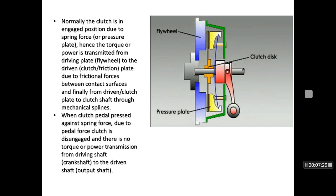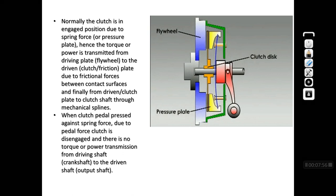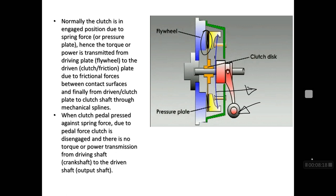This diagram indicates the working of a single plate clutch, showing the flywheel, pressure plate, and friction plate. When the clutch is in the disengaged condition, a small gap is present between the flywheel and the friction plate. When you press the lever against the spring action, the friction plate engages with the flywheel at two surfaces, and friction between those surfaces transmits the power.